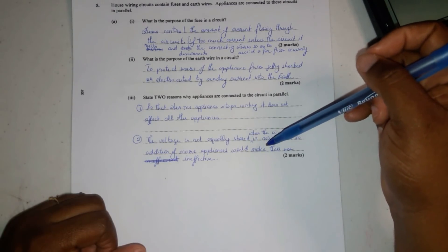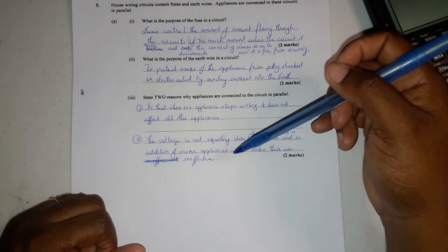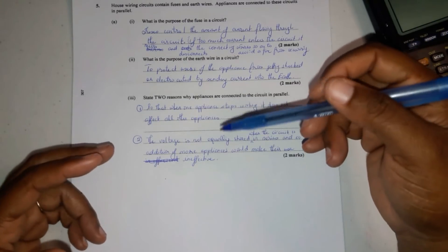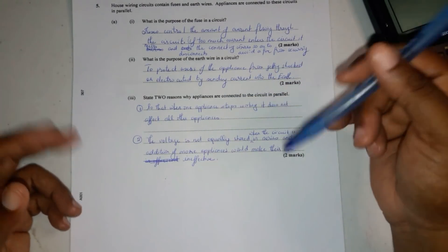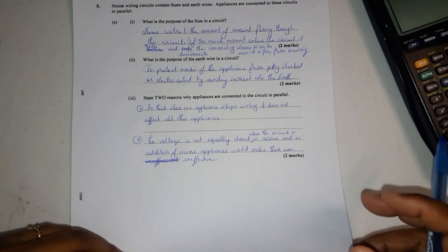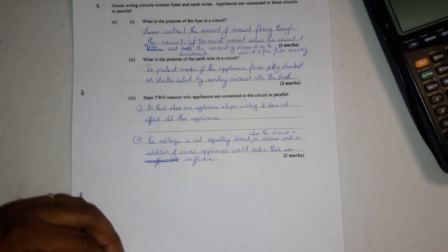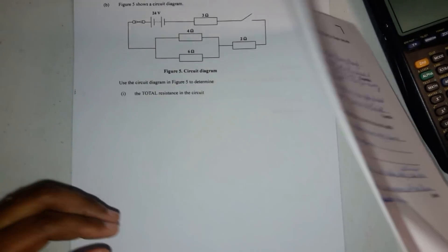And so additional appliances will make their use ineffective. Right? It would make the appliance work slower in series. Because if you keep adding bulbs, if you set up a series circuit with 2 bulbs and you add a 3rd circuit, what would happen is that the bulbs are going to start getting dimmer and dimmer. So, yeah. So that's that.